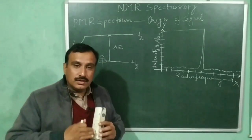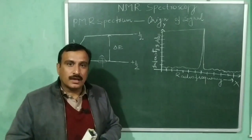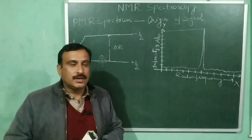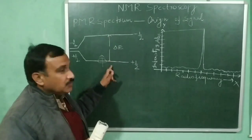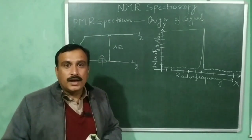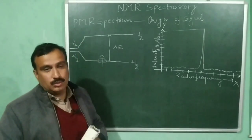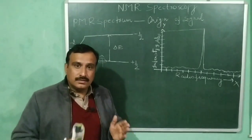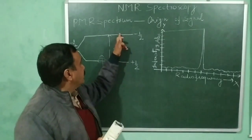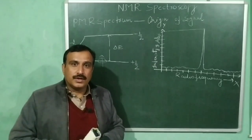We then irradiate this proton with varying radio frequencies. When the radio frequency — or the energy of the radio frequency — becomes equal to this energy difference, that radiation is absorbed and the proton is excited from the lower energy level to the higher energy level. When the energy of the radio frequency matches this energy difference, it is called resonance.